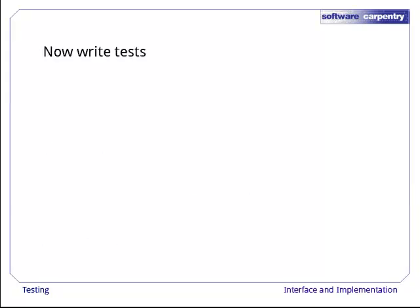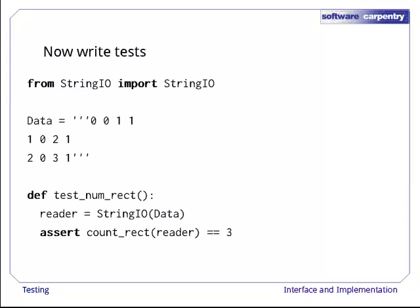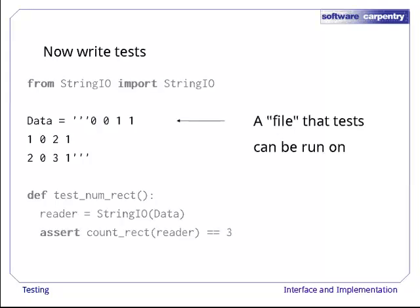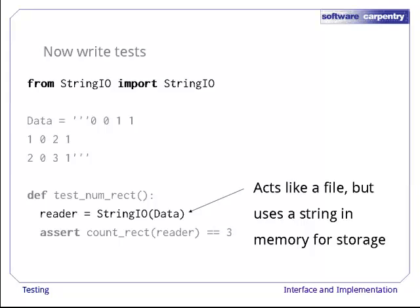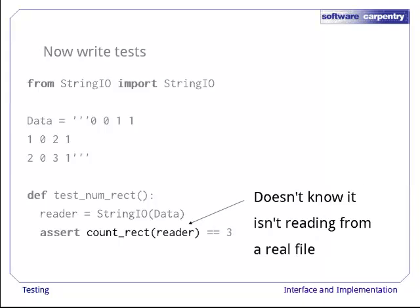Now let's write some tests. This piece of code checks that countrect_in, the function that actually does the hard work, handles the three rectangle case properly. Instead of an external file, we're using a string in the test program as a fixture. To make this string look like a file, we're relying on a Python class called StringIO. As the name suggests, this acts like a file, but uses a string instead of the disk for storing data. StringIO has all the same methods as a file, like ReadLine, so countrect_in doesn't know that it isn't reading from a real file on disk.